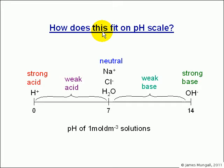And how does this fit on the pH scale? Well, water and spectator ions we've got as pH 7, a strong base with OH- ions of 1 mole per decimetre cubed will have a pH of 14, and a weak base will be between the 7 and 14.